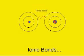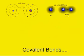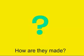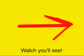Oh yeah, ionic bonds, covalent bonds, both of them chemical bonds. How are they made, what's the difference, watch you'll see.